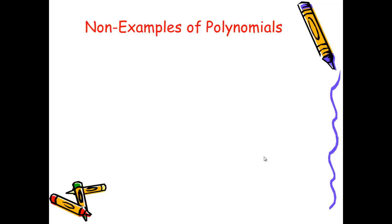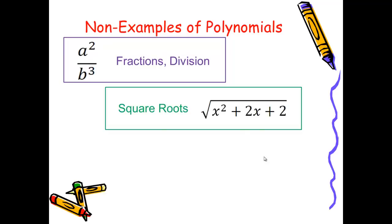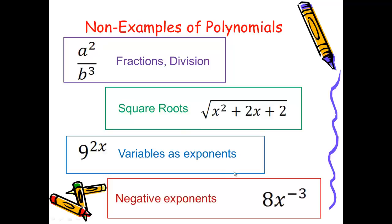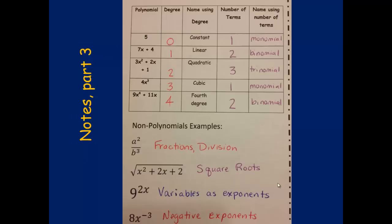We've looked at many examples of polynomials, but it's important to recognize that not all expressions are polynomials. Here are a few examples of items that are not considered polynomials: expressions that include fractions with a variable in the bottom, square roots, expressions that have a variable in the exponent, and also negative exponents. So all of these are examples of expressions that are not polynomials.